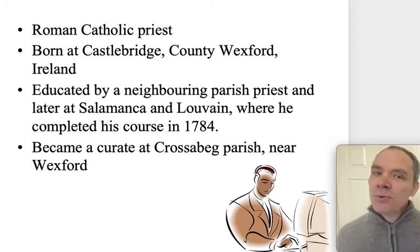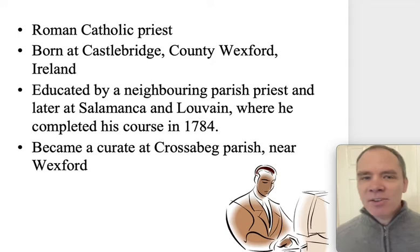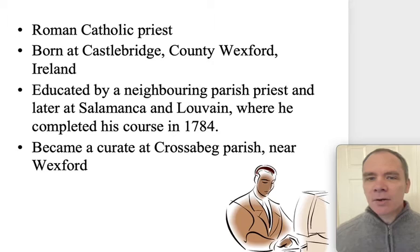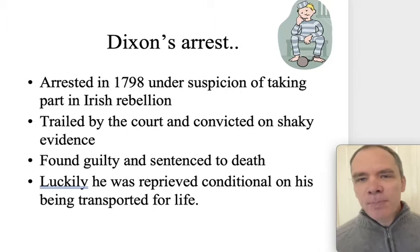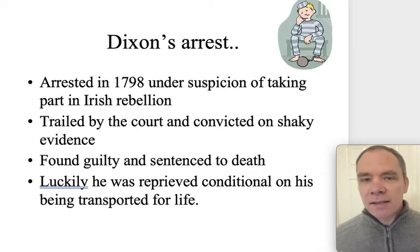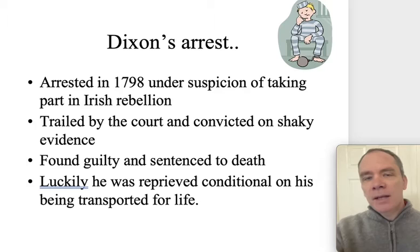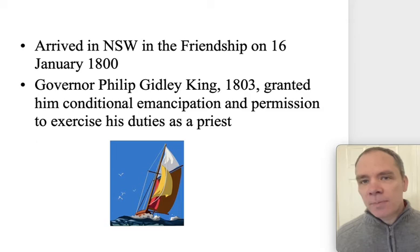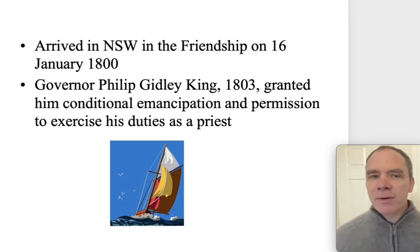A little more about James Dixon: he was a Roman Catholic priest born in Castle Bridge County, Wexford, Ireland. He was educated by a neighbouring parish priest and later at Salamanca and Leuven, where he completed his course in 1784, becoming a curate in Crossenburg Parish near Wexford. He was arrested in 1798 under suspicion of taking part in the Irish rebellion, tried by court, convicted on scant evidence, found guilty and sentenced to death. He was reprieved on condition of being transported for life, arriving in New South Wales on the ship Friendship on the 16th of January 1800. Governor Philip Gidley King in 1803 granted him conditional emancipation and permission to exercise his priestly duties.